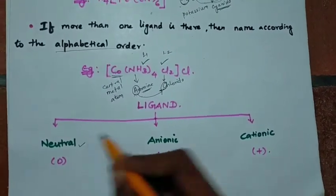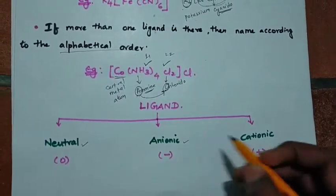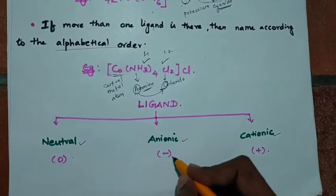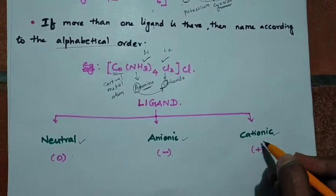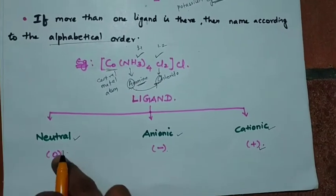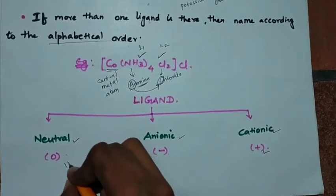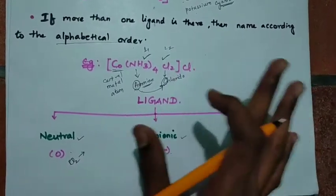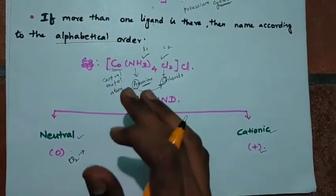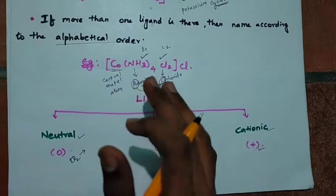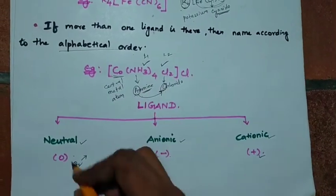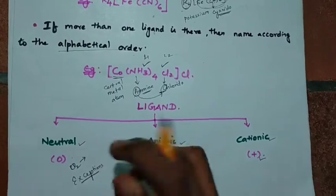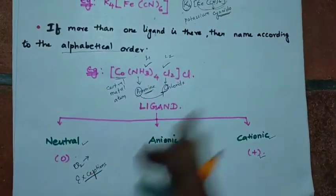We have three types of ligands: neutral ligand, anionic ligand, and cationic ligand. Neutral has no charge, anionic has a minus charge, cationic has a plus charge. For a neutral ligand, for example dioxygen, the naming is by its usual name. There are some exceptions, but if you learn the rules it will be easy.